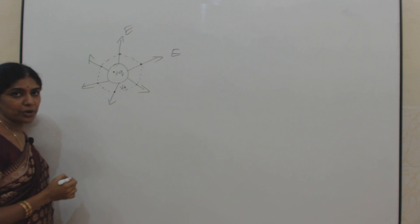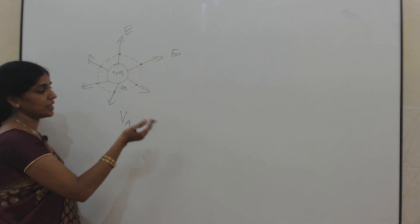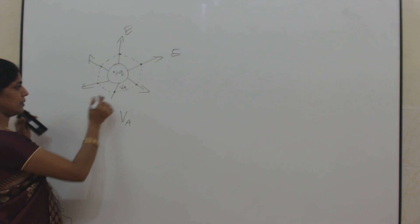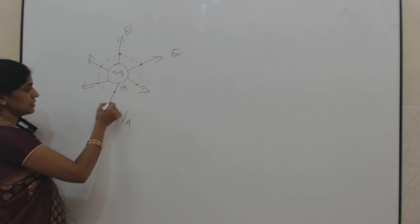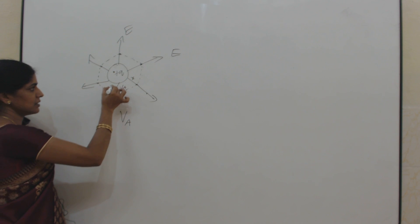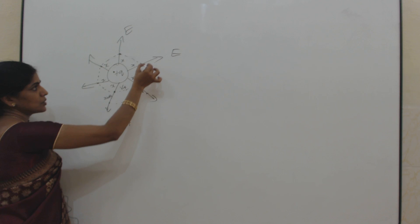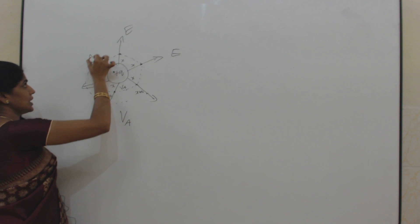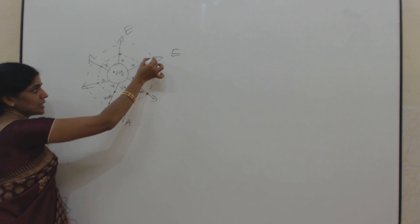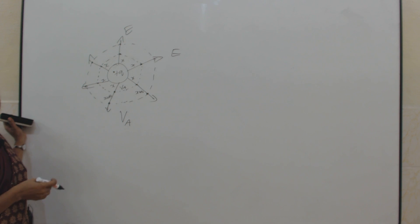At all these equidistant points, the potential will be the same. Let VA be the potential at this point — so at every point on this sphere at distance x, the potential will be VA. Now take some more distance — let that be x plus dx. I will take points at distance x plus dx, and joining all those points gives another sphere. At this sphere, all the points will be at the same potential. Thus, we call this surface the equipotential surface.